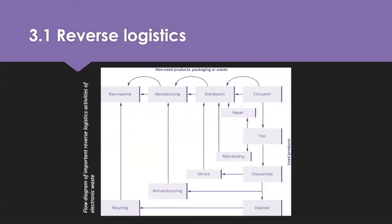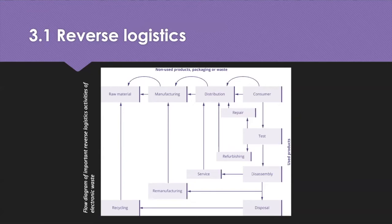Reverse logistics is the process of moving or transporting goods from their final destination for the purpose of capturing value in terms of reuse, manufacturing, refurbishing, recycling or proper disposal. The effective and efficient management of the material flow is crucial. Used products or products at the end of their lives are returned to a collection point where an evaluation of their state is undertaken, and those products can either be repaired, refurbished, remanufactured or recycled. Any products or components assessed as waste are sent for disposal.